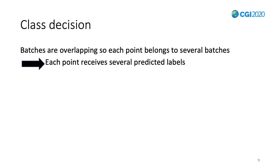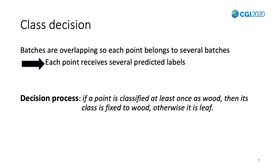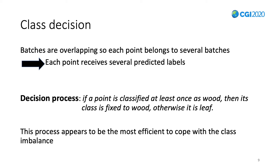The fourth and last step of our method is the class decision process. Since the batches of points are overlapping, each point of the 3D point cloud belongs to several batches and will receive various predicted labels, one for each batch it belongs to. Then a class decision process compiles the segmentation result: among every batch a point belongs to, if it is classified at least once as wood, then its class is fixed as wood. This class decision process appears the most efficient approach to cope with the class imbalance.